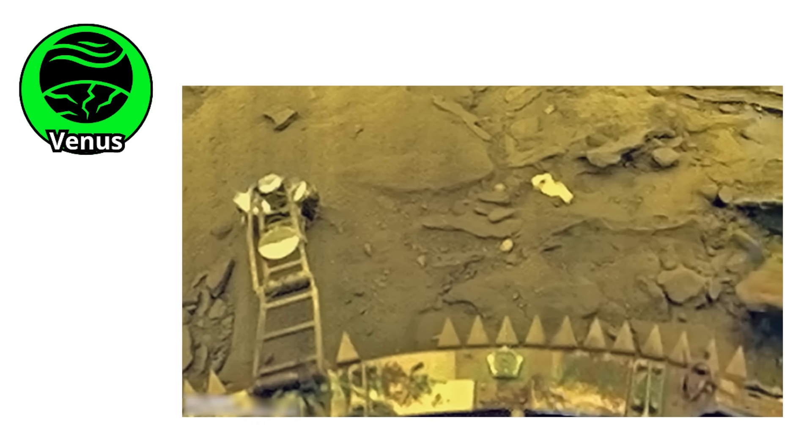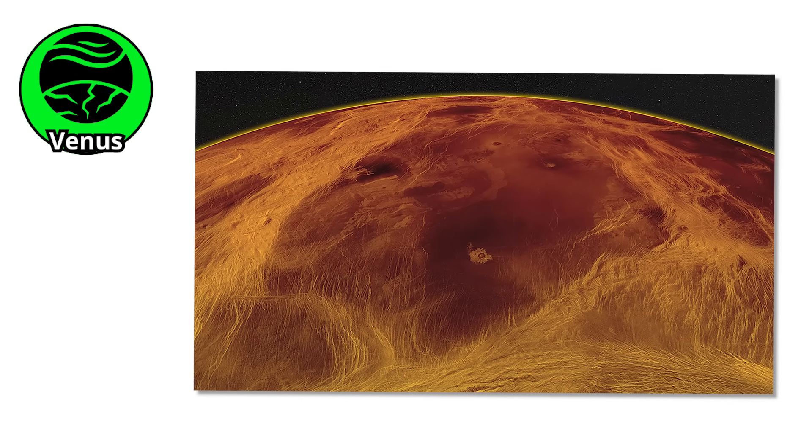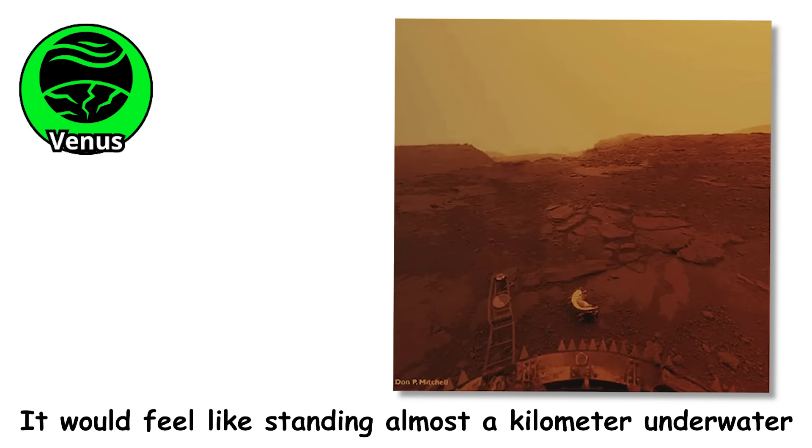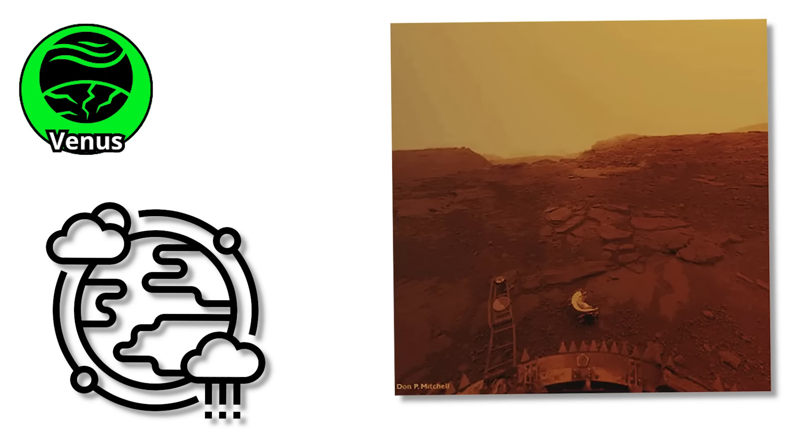The air itself would crush you. The pressure on Venus is around 90 times greater than what we feel at sea level on Earth. It would feel like standing almost a kilometer underwater. If the heat did not destroy you, the weight of the atmosphere would flatten you like a tin can.